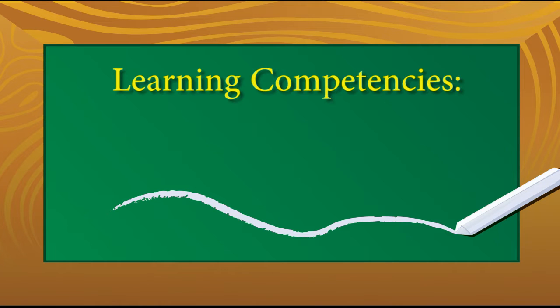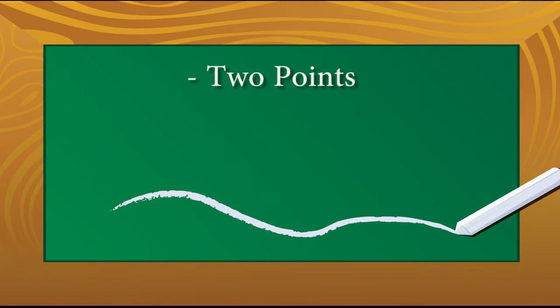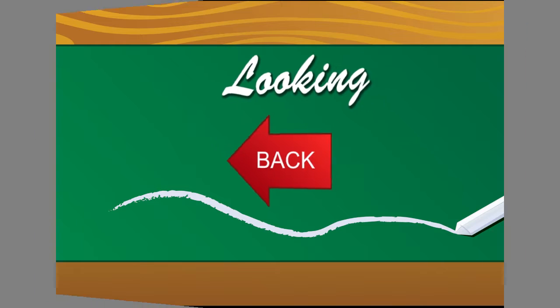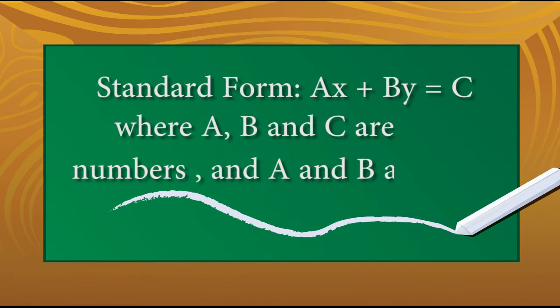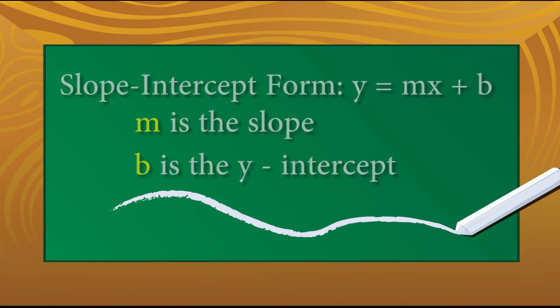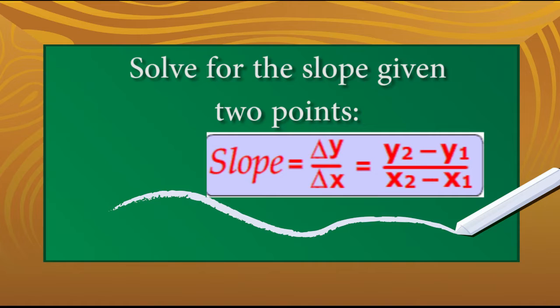Learning competencies: Find the equation of the line given two points, the slope and a point, or the slope and its intercepts. Standard form: ax plus by is equal to c, where a, b, and c are real numbers and a and b are not zero. Slope-intercept form: y is equal to mx plus b, where m is the slope and b is the y-intercept. The slope given two points is y sub 2 minus y sub 1 over x sub 2 minus x sub 1.